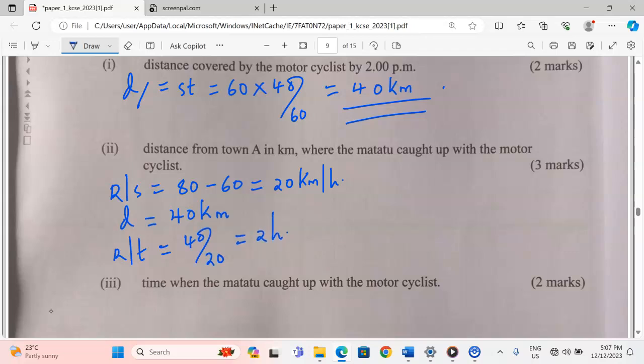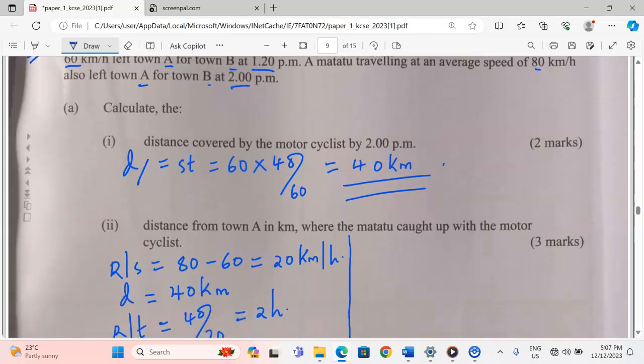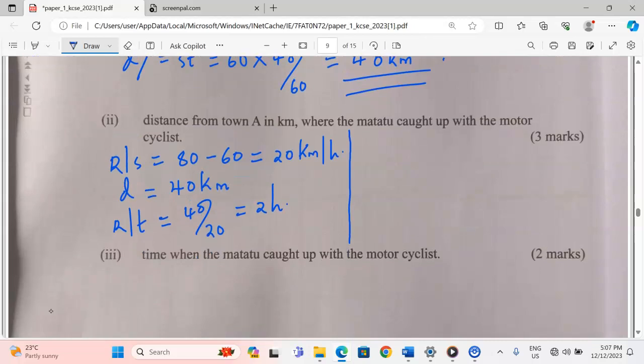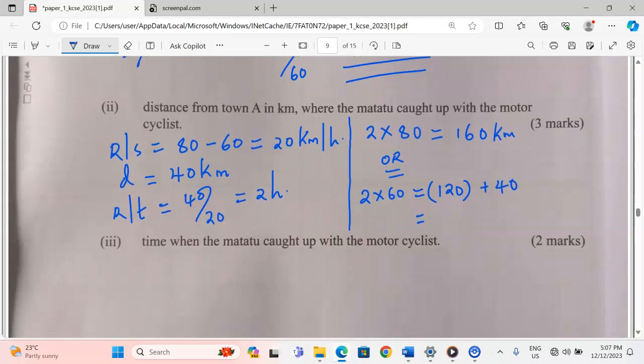They will be meeting after 2 hours. Now if the meeting is after 2 hours, distance from town A in kilometers - they are all from town A. So 2 hours, if we consider the speed of the second vehicle, we're going to get 160 kilometers. Alternatively, you can say 2 hours times the speed of 60 to give us 120 kilometers, but now we will add the 40 kilometers which the motorist had already covered from A. Therefore, for the matatu to catch up, the motorist will cover 120, but the motorcyclist had already covered 40. It will still be 160 kilometers.